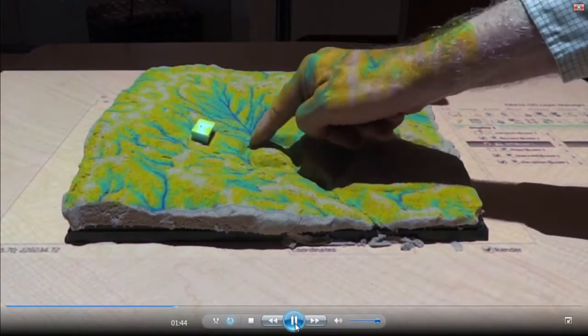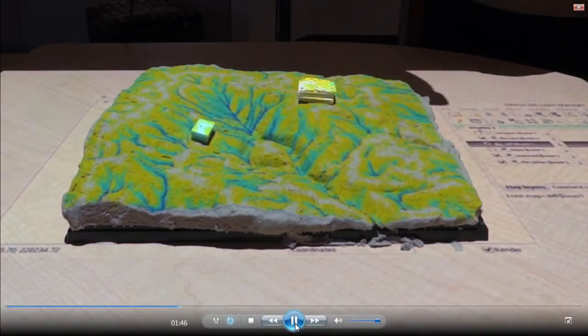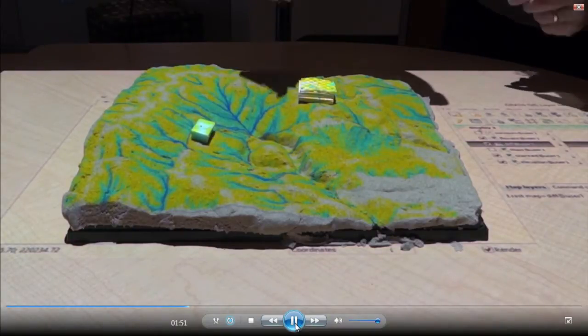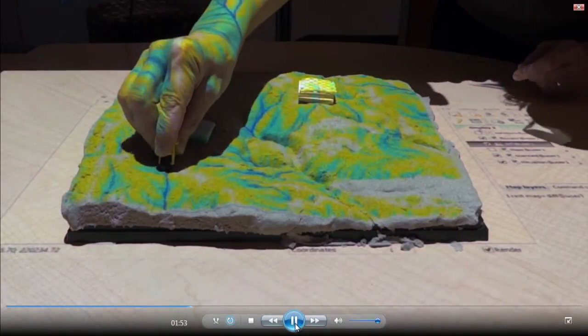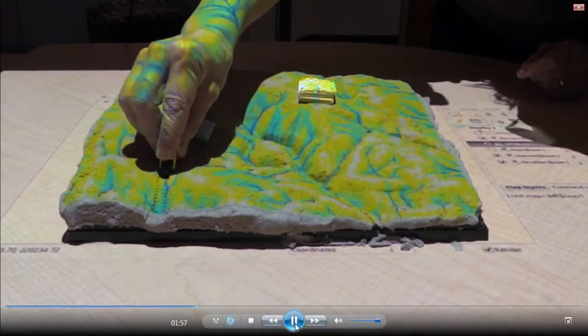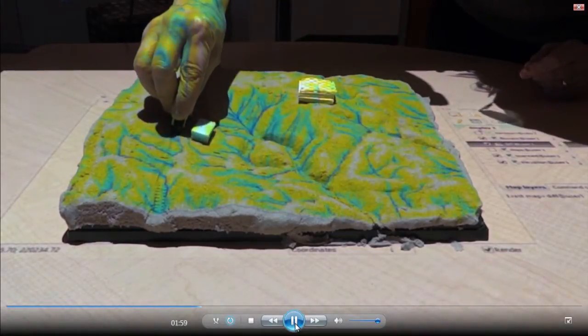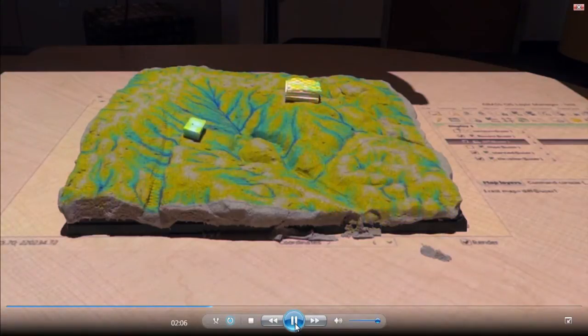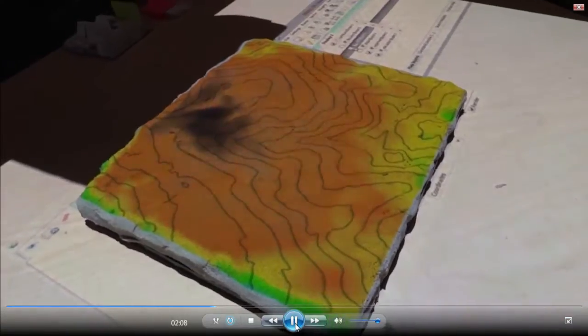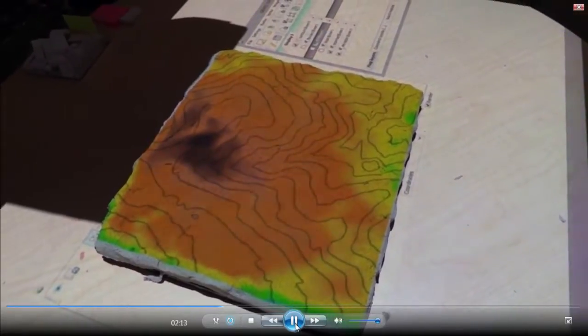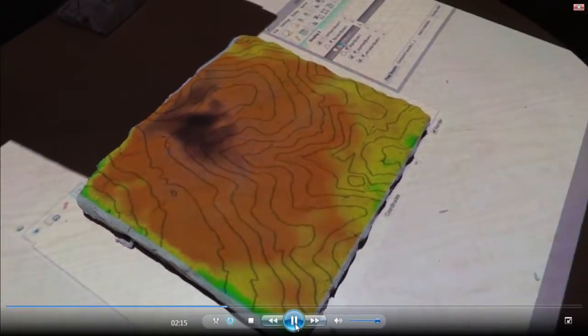We're creating different change scenarios and in near real time it's updating the flow accumulation model with a new digital elevation model and showing the changes. We're using this in several ways. What you'll see next is grading. We're using it for grading to teach young landscape architecture students about the three-dimensional form of topography.